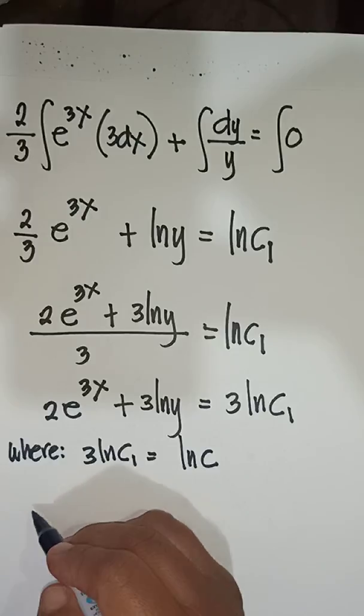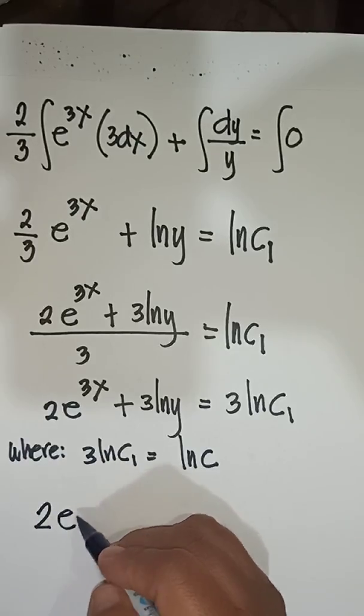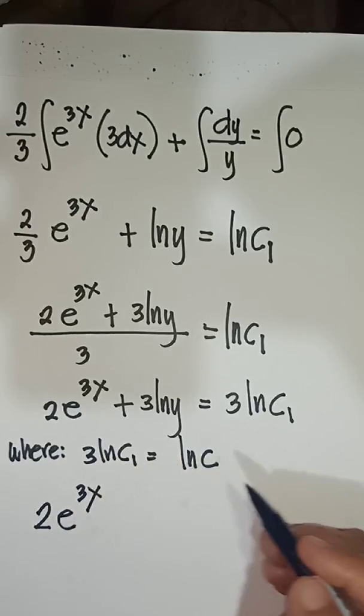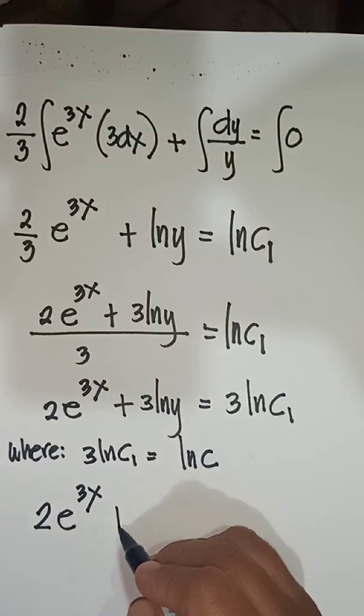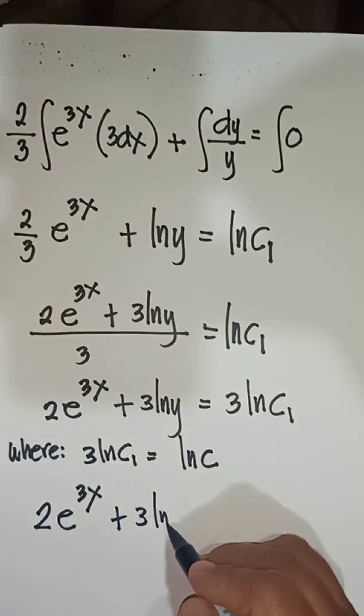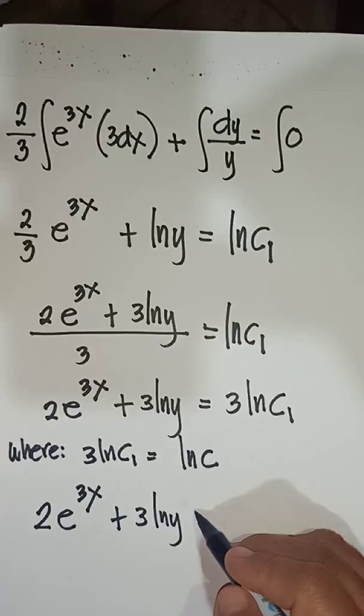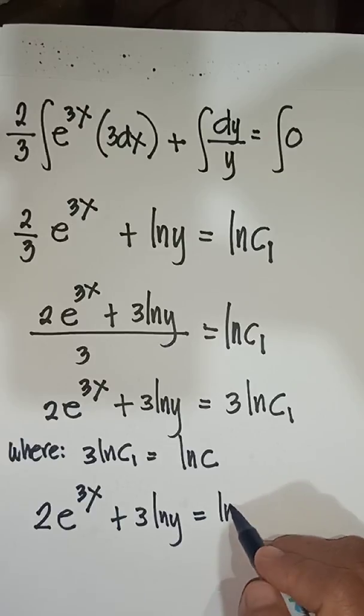So, 2e^(3x) plus 3 ln of y equals ln of c.